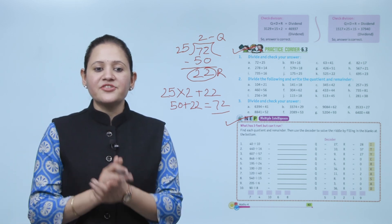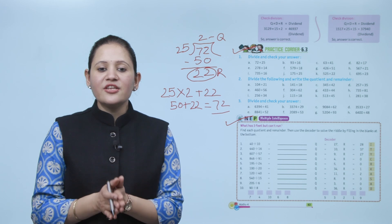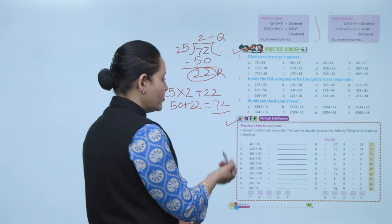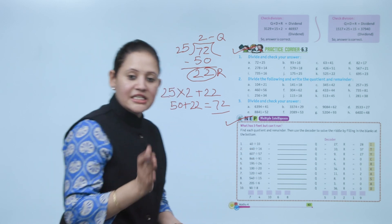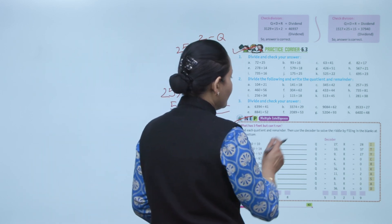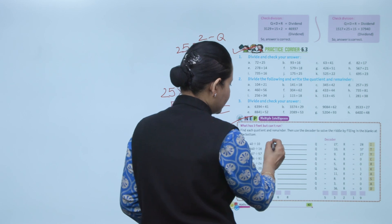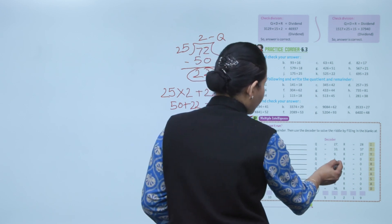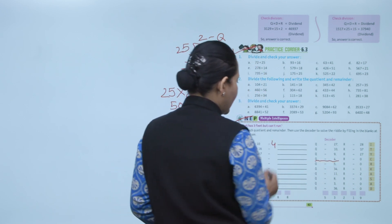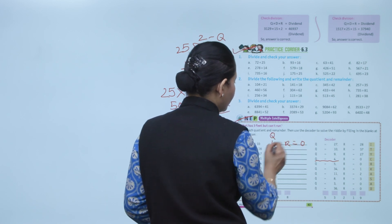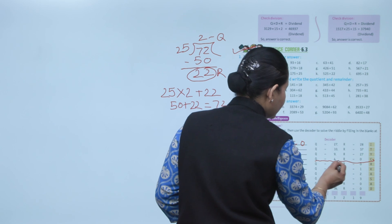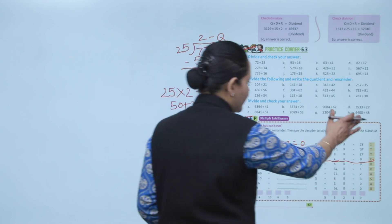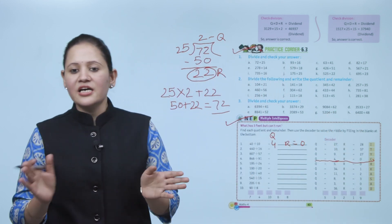Next is multiple intelligence: a riddle — 'What has 3 feet but can't run?' Find each quotient and remainder, then use the order to solve the riddle by filling in the blanks. For example, 40 ÷ 10 = 4, remainder 0 — so the first letter is C. Divide each number, find the quotient and remainder, decode the answer to find the solution to the riddle.